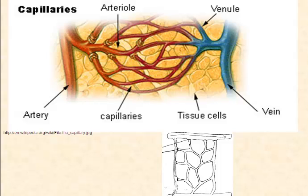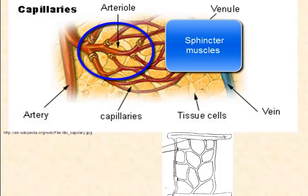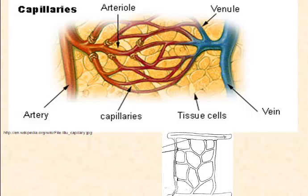It accomplishes this by controlling blood flow to capillary beds. Our autonomic nervous system controls tiny muscles in the arterioles that act as gates to the arterioles that lead to the capillary beds.